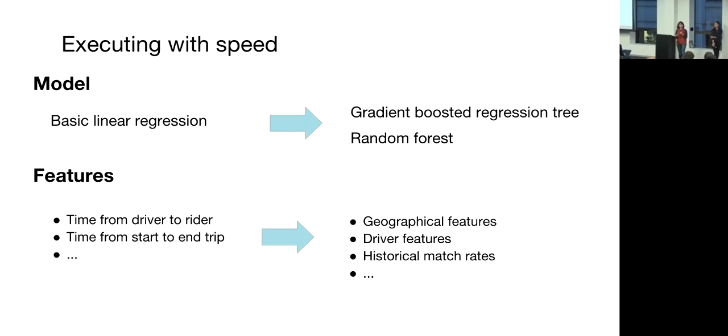This already gets us a huge part of the way there, even before we start using more sophisticated models, such as gradient boosted regression trees or random forests, or even throwing in more features, such as geographical features like neighborhoods that may need additional calibration city by city, or driver features like how experienced the driver is, which may require more engineering work to get in real time.